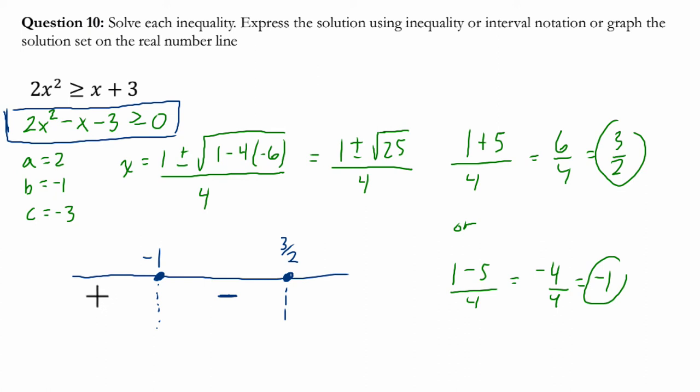Then let's plug in a nice number over here. Let's plug in negative 2. So 2 times negative 2 squared, well, that's 2 times 4, which is 8, minus negative 2, which is plus 2, which is 10, minus 3, which is 7. So that's a positive.